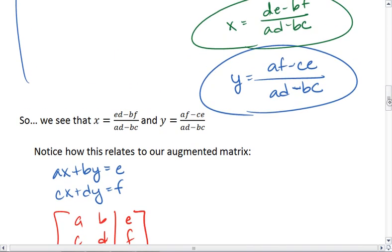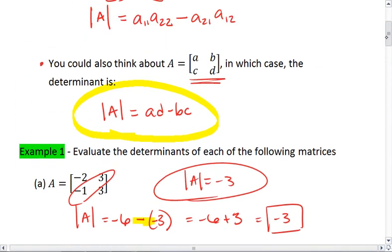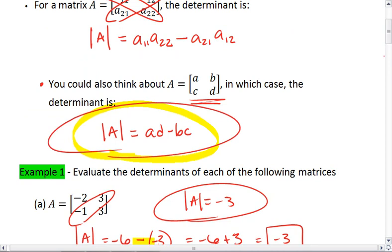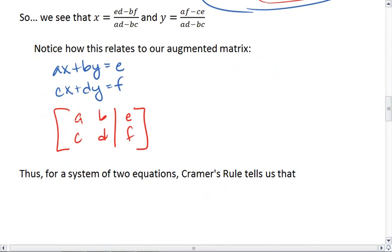Hopefully what you're noticing is that the denominator for x and y above are the same. And in fact, they're the value of the determinant of the matrix A, B, C, D, which is our main part of our augmented matrix here. And we would say that the determinant of the matrix is AD minus BC.